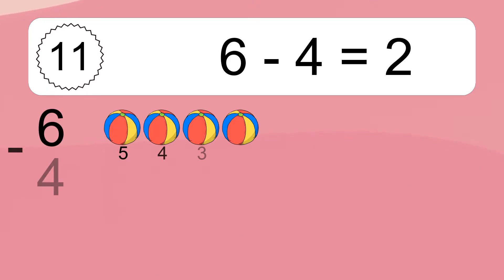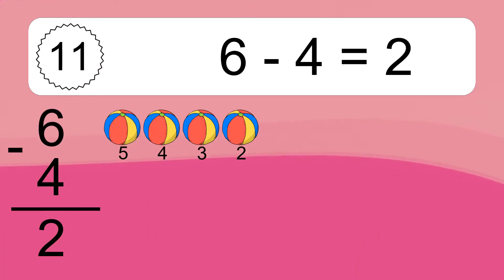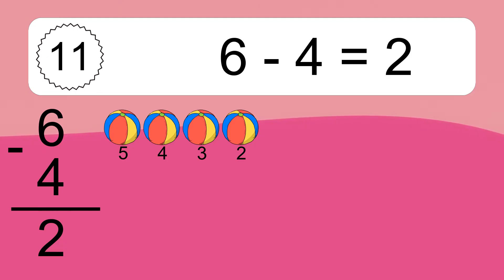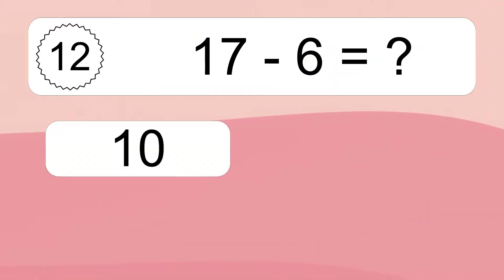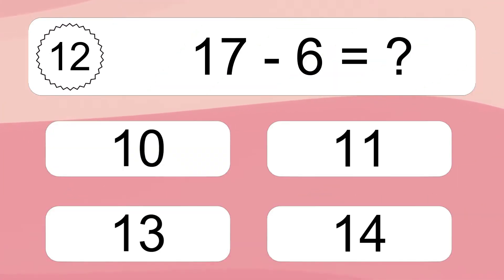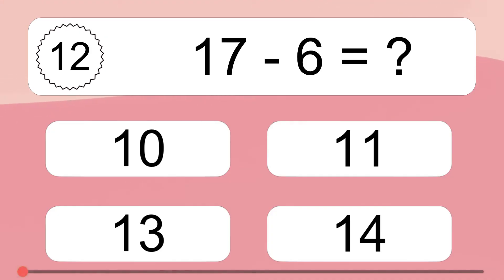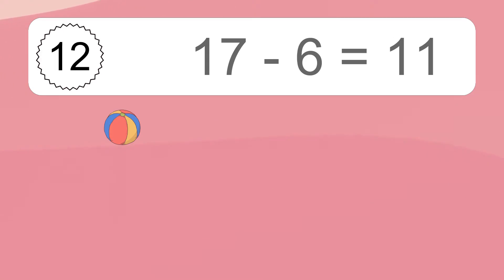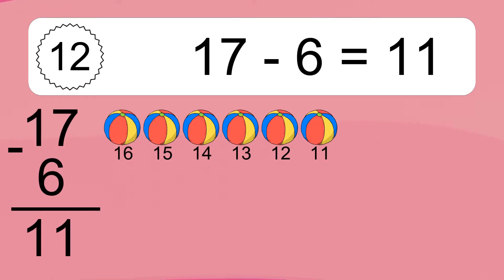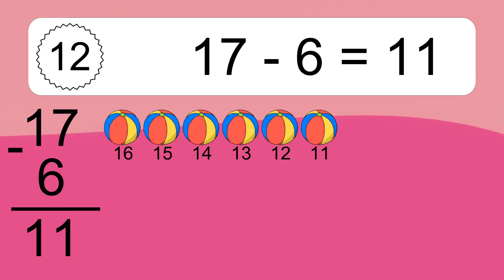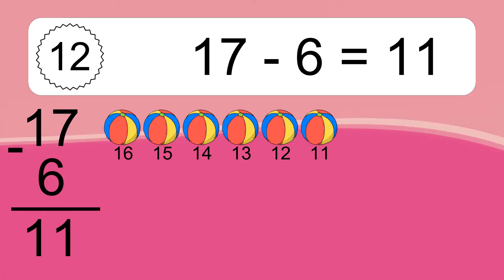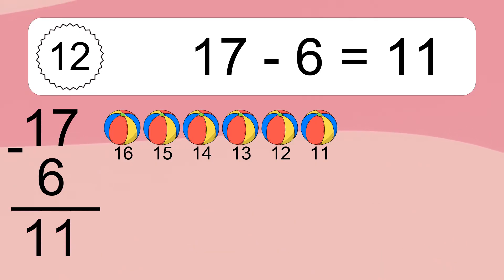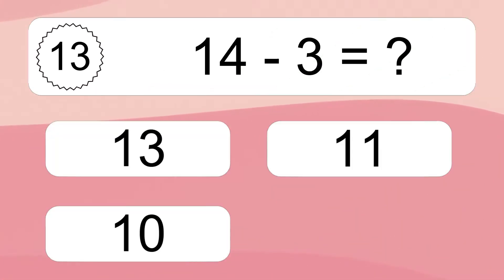6 minus 4 equals 2. Let's count it! 5, 4, 3, 2. 17 minus 6 equals what? 17 minus 6 equals 11. Let's count it! 16, 15, 14, 13, 12, 11. 14 minus 3 equals what?